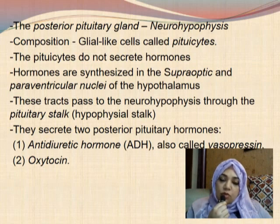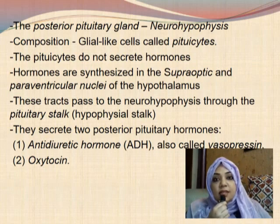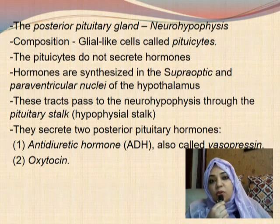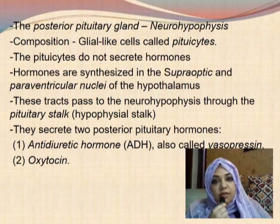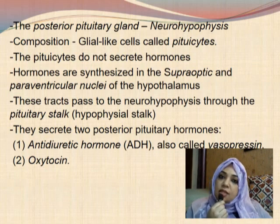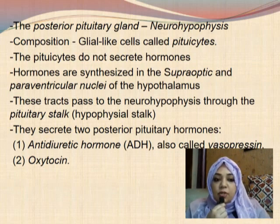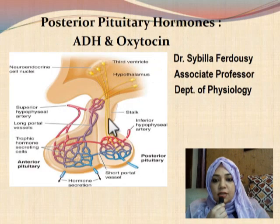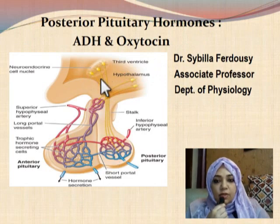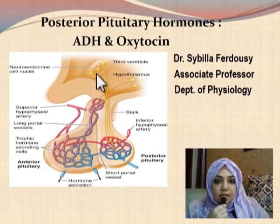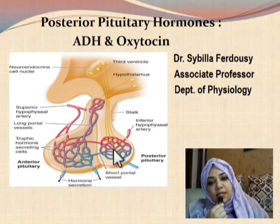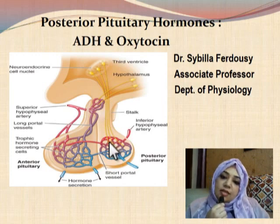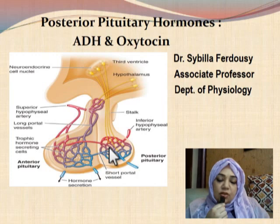The pituicytes do not secrete the hormones. The posterior pituitary hormones are synthesized in the hypothalamus and so they are known as neuroendocrine hormones. After being synthesized in the supraoptic and paraventricular nuclei of the hypothalamus, these hormones are transported to the posterior pituitary gland through the hypothalamo-hypophysial tracts and then they enter into the capillaries and into the blood.